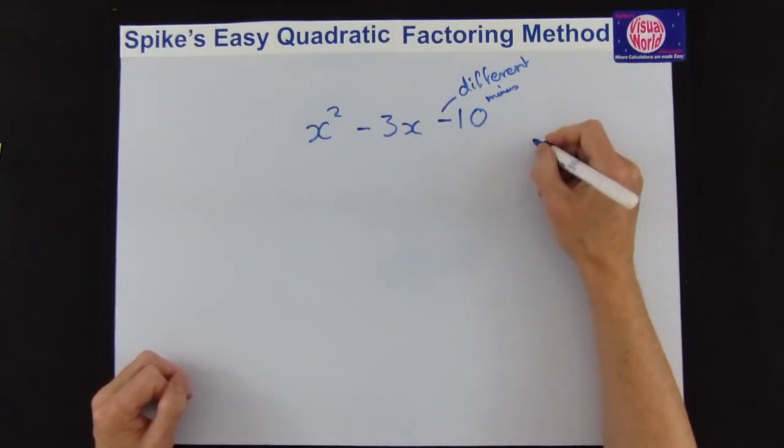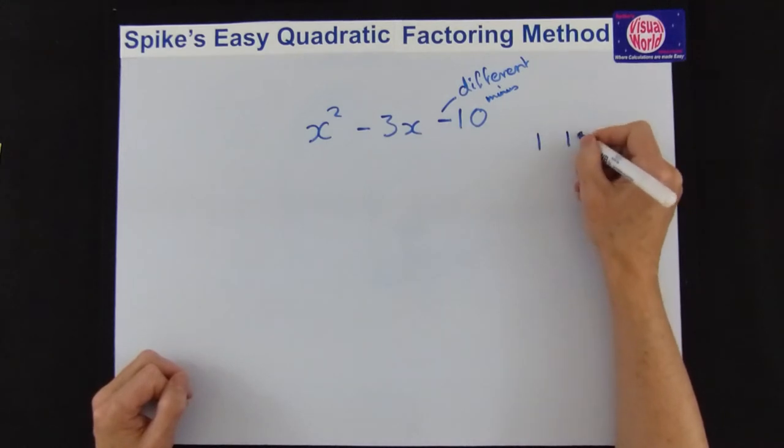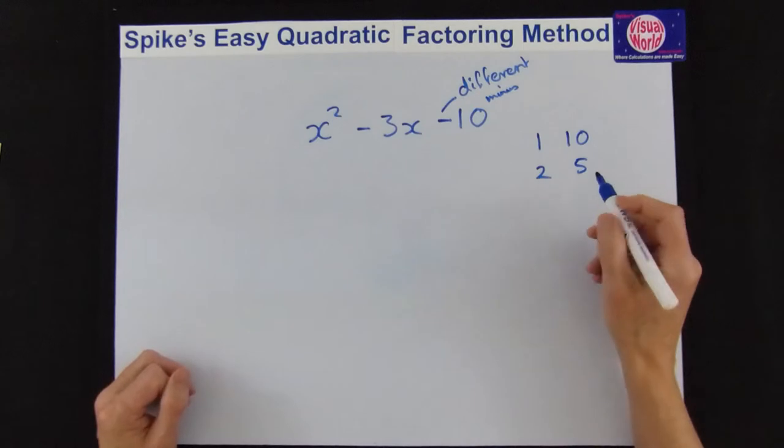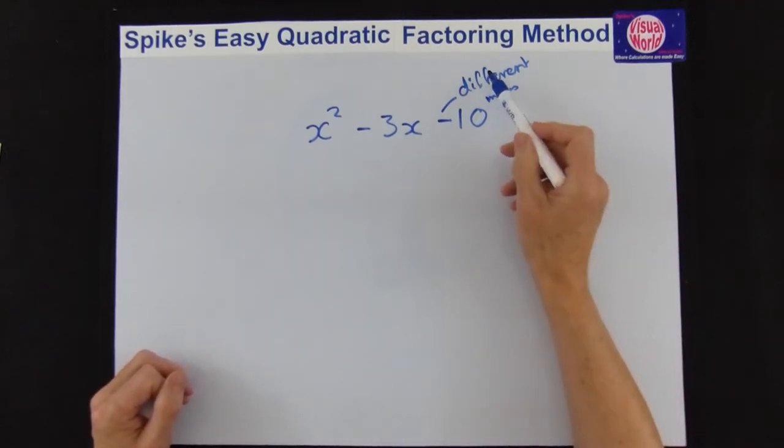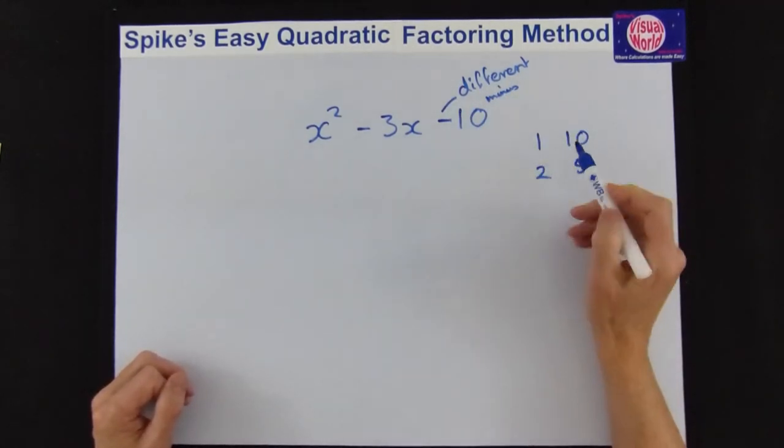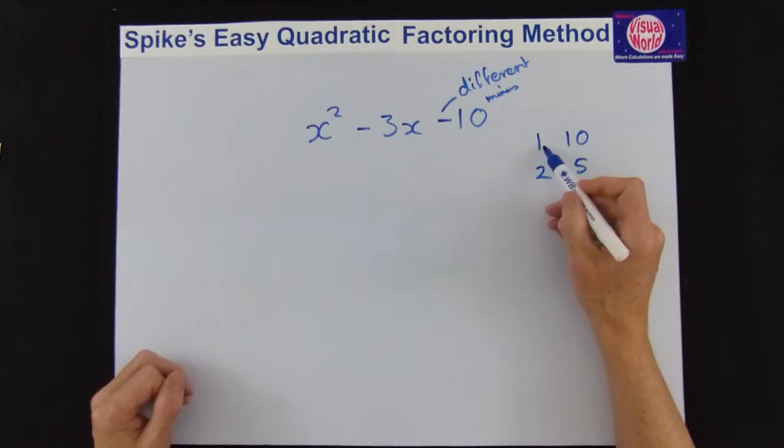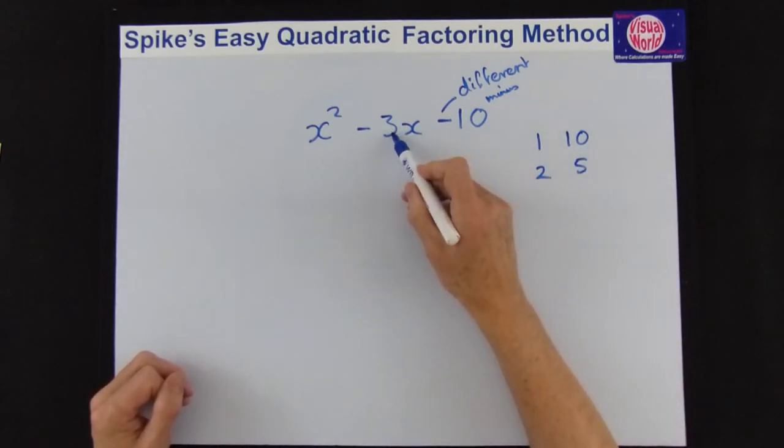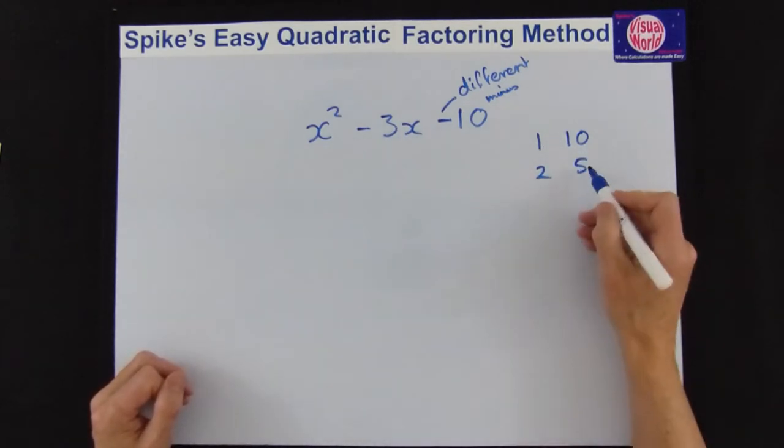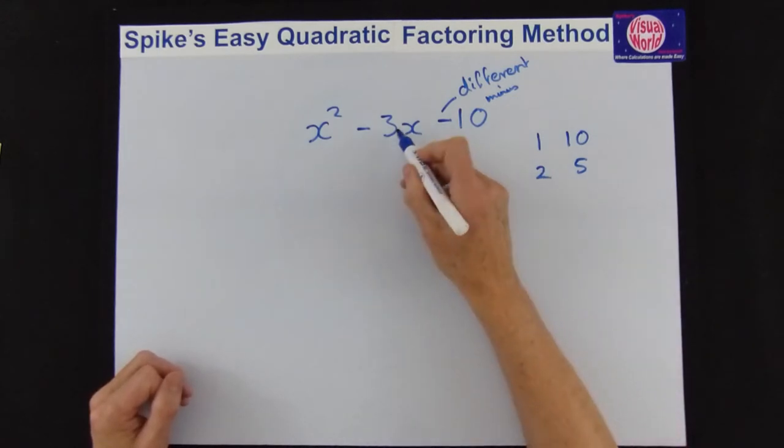So we know they're different and we're going to be taken away. So we can start to write our factors for 10, so you just go 1 times 10 or 2 times 5. And we're looking for a difference, we're taking away. So 10 minus 1 gives us 9, so that's not 3, so that can't be it. But 5 take away 2 gives us 3, so that is your answers there.